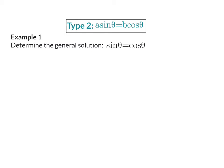In example 1, we need to determine the general solution, and as mentioned, here we have two terms with sin and cos, two trig functions, but this cannot be factorized.